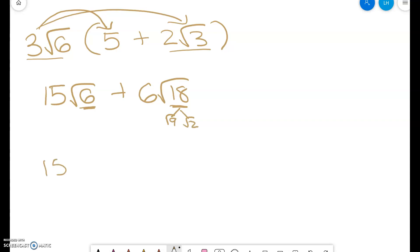And so now I have 15 square roots of 6 plus 6 times 3 because square root of 9 is 3, so 18 square roots of 2. I can't add these together because they're not like radicals.